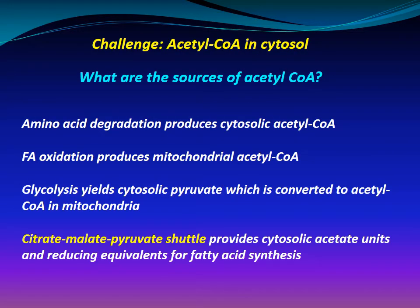A key challenge is providing acetyl-CoA in the cytosol. Sources of acetyl-CoA include: amino acid degradation, which produces cytosolic acetyl-CoA; fatty acid oxidation, which produces mitochondrial acetyl-CoA; and glycolysis, which yields cytosolic pyruvate that is converted to acetyl-CoA in the mitochondria. The citrate-malate-pyruvate shuttle provides cytosolic acetate units and reducing equivalents for fatty acid synthesis.